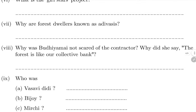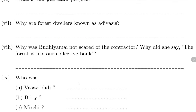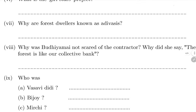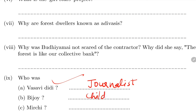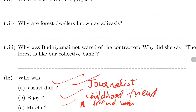Who was Vaisavi Didi? Vaisavi Didi was a journalist who met Suryamani during her college time and with whom she participated in the movement. Bijoi was Suryamani's childhood friend who she later married. Mirchi was a friend with whom she could share everything.